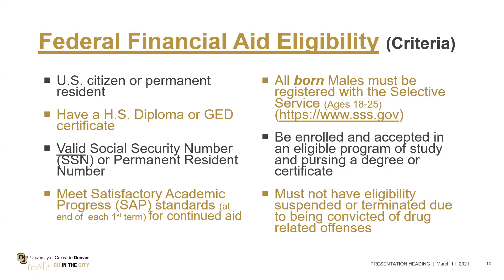The third SAP standard is that the student must be progressing toward graduating within a 150% timeframe, meaning they have six years of full-time enrollment to complete their degree before financial aid is suspended. If it is suspended for any of those components — it just takes one — they would have to appeal to the financial aid office to see if they can get their financial aid reinstated.